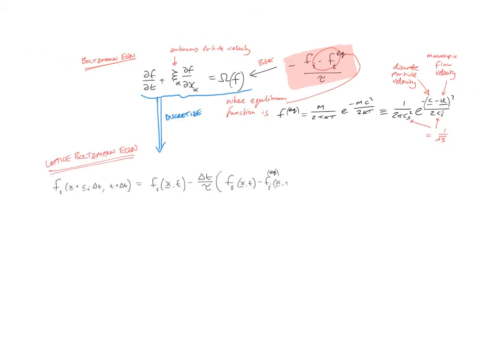Starting with the Boltzmann equation, we discretize this as follows. We have our distribution function f at the next time step, t plus delta t, equal to our distribution function at the current time step, then take away the contribution due to the collision term, f minus f equilibrium.